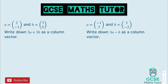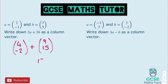For the first question, we've got 2A plus 3B. Doubling A gives 4 and minus 2. Three lots of B gives 9 on the top and 15 on the bottom. Adding those together: 4 plus 9 on the top is 13, and negative 2 add 15 on the bottom also gives us 13. So 13 over 13 is our final answer for 2A plus 3B.